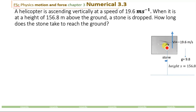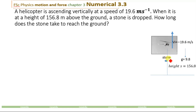A stone is dropped when the helicopter is at a height of 156.8 meters. When the helicopter is at a height of 156.8 meters, a stone is dropped from the helicopter. How long does the stone take to reach the ground? We will determine the time taken by this stone to reach the ground when it is dropped from the helicopter when the helicopter was at a height of 156.8 meters.